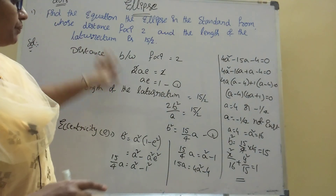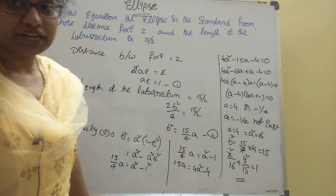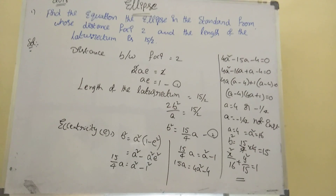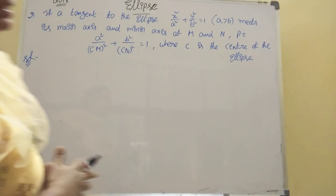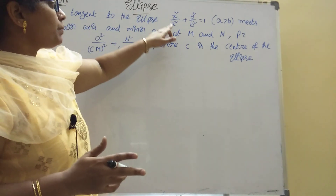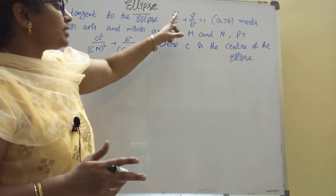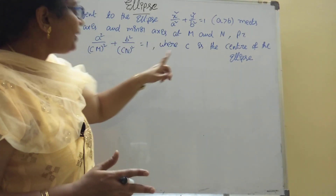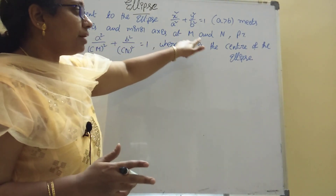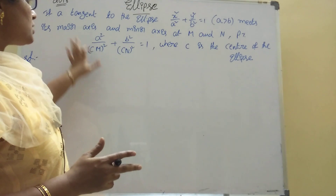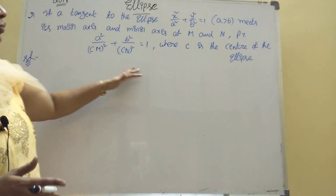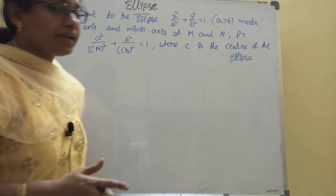The next problem: a tangent to the ellipse meets the major axis at M and minor axis at N. Prove that a²/CM² + b²/CN² = 1, where C is the center of the ellipse.